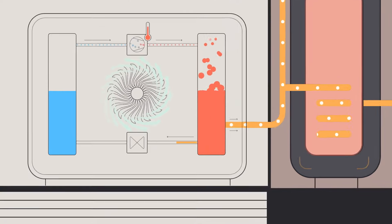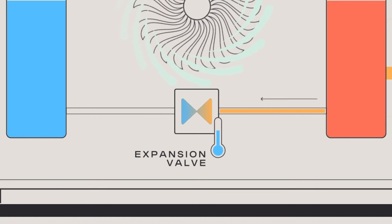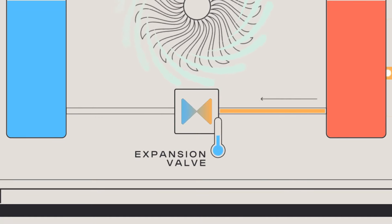When the liquid refrigerant reaches the expansion valve, pressure is released for the liquid to cool down, because when the pressure decreases, the temperature decreases too.